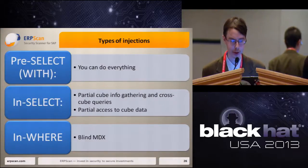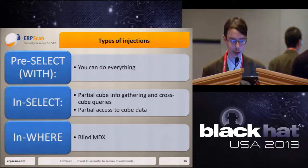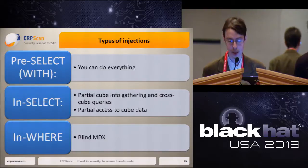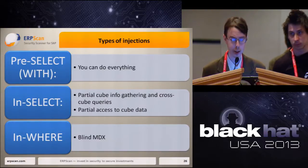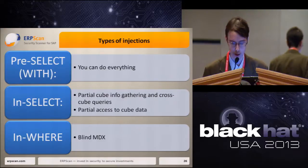We have three possible types of MDX injections with possible results. If we are able to inject into the pre-SELECT section, we can do almost everything with the exception of data modification. If we can inject into the SELECT section, we can gain partial information about cube metadata and access unexpected and confidential data, including other cubes. In the WHERE section, you can only use blind MDX injections. And of course, you can call user-defined functions in any of these sections.